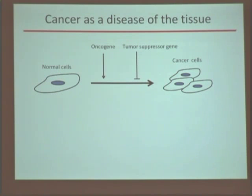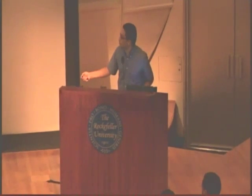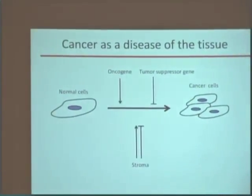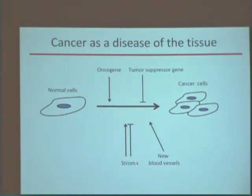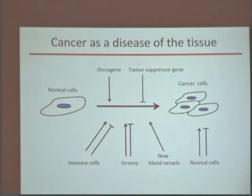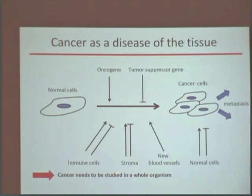In order for us to study cancer, we cannot just study it in a cell because cancer is a disease of the whole organism. So if you have a normal cell, and you switch on an oncogene and switch off a tumor suppressor gene into a cancer cell, there is an interaction in all the cells surrounding the cancer cell, which is called stroma. There are new blood vessels that form, and there are new cells which the cancer cell will interact with, as well as normal cells. These cells then metastasize, so the cancer needs to be studied in a whole organism — you need to study it in a whole animal.